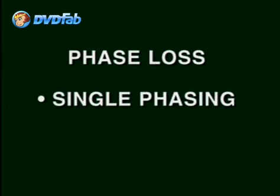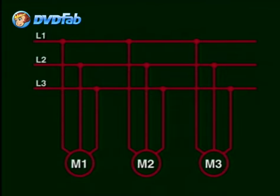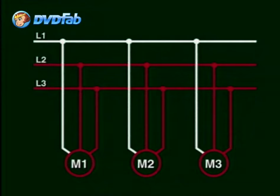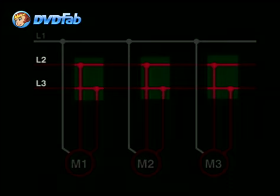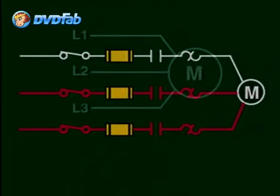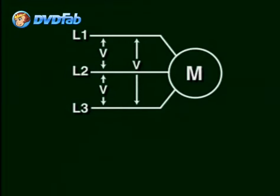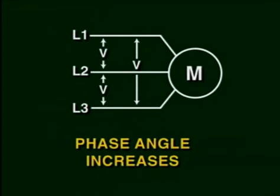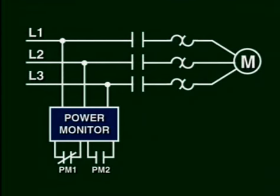A phase loss can be considered as the worst case of phase imbalance, and is called single-phasing. This condition results in the total loss of one phase and can have serious repercussions — it can go undetected for a while, perhaps long enough to burn out a three-phase motor. A three-phase motor will continue to run even if it is missing one phase because it will draw the current necessary from the other two lines. Thermal overloads are not always capable of preventing damage under single-phasing conditions.